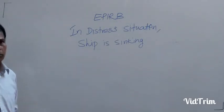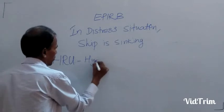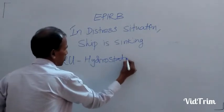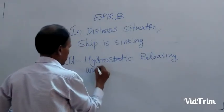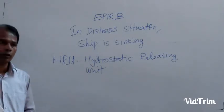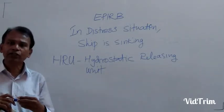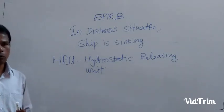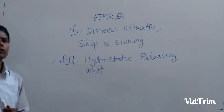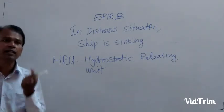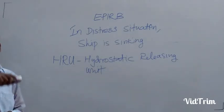The HRU, Hydrostatic Releasing Unit. The EPIRB is fitted in the HRU. When the ship is sinking, water gushes inside the HRU chamber. There are different types of models available. The water gushes inside the chamber because of the water pressure, that is called the hydrostatic pressure. A small knife fitted in the HRU cuts the holding rod and the EPIRB is released from the HRU and it comes to the sea water surface. And it is floating.